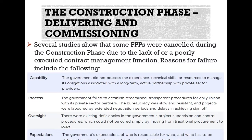Several studies show that some PPPs were cancelled during the construction phase due to the lack of, or poorly executed, contract management function. Reasons for failure include: Capability — the government did not possess the experience, technical skills, or resources to manage its obligations associated with a long-term active partnership with private sector providers; Process — the government failed to establish streamlined, transparent procedures for daily liaising with its private sector partners, with bureaucracy that was slow and resistant, and projects labored by extended negotiation periods and delays; and Expectations — the government's expectation of who is responsible for what and what has to be delivered by when failed to match the understanding of the private sector.